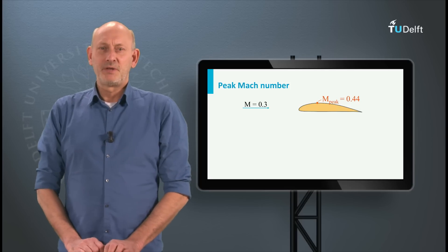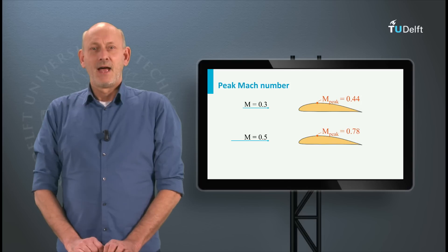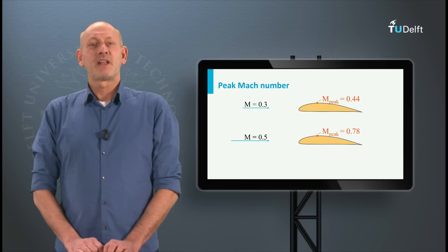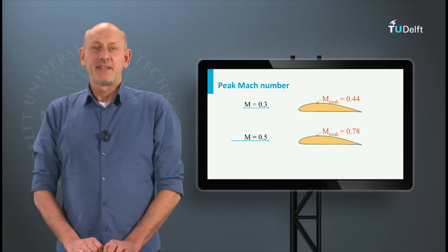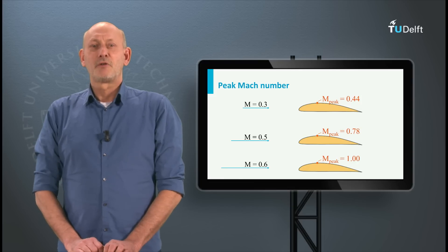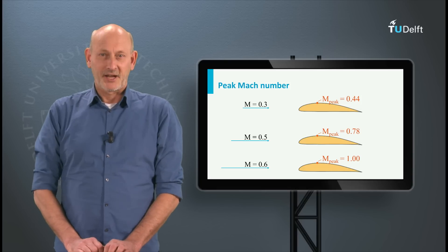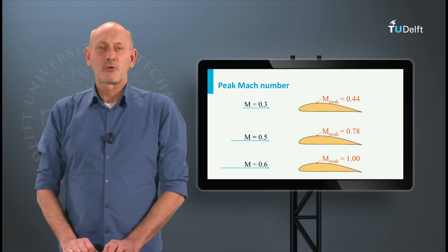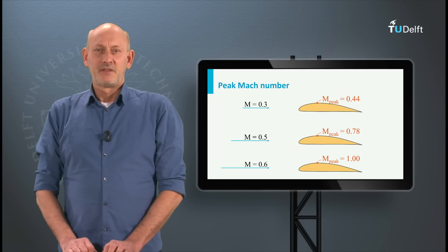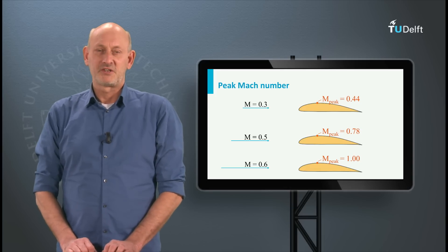If we now increase the flow speed, the Mach number at this point will also go up. At Mach 0.5 it will have reached a value of 0.78. And at Mach 0.6, for the first time the flow over the airfoil suction side will reach the speed of sound and will go sonic. This Mach number of 0.6 is called the critical Mach number.